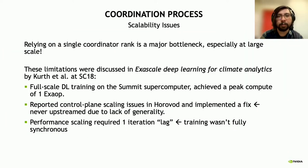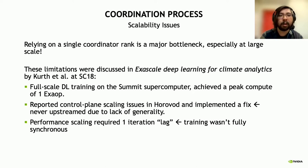Having described the Horovod coordination process, we can look at what scalability issues exist. Relying on a single coordinator rank can be a major bottleneck, especially at large scale. Maybe for tens of workers it's okay, but when scaling to thousands or 27,000 workers, inefficiencies in control plane metadata message passing can easily add up and ruin scaling performance. These limitations were first discussed in 'Exascale Deep Learning for Climate Analytics' by Kurth and others at Supercomputing 2018. In that paper, they scaled a DL training workload on the full Summit supercomputer and achieved a peak compute of one exa-op in FP16, and they reported control plane scaling issues in Horovod and implemented their own fix—but it was never upstreamed due to a lack of generality.